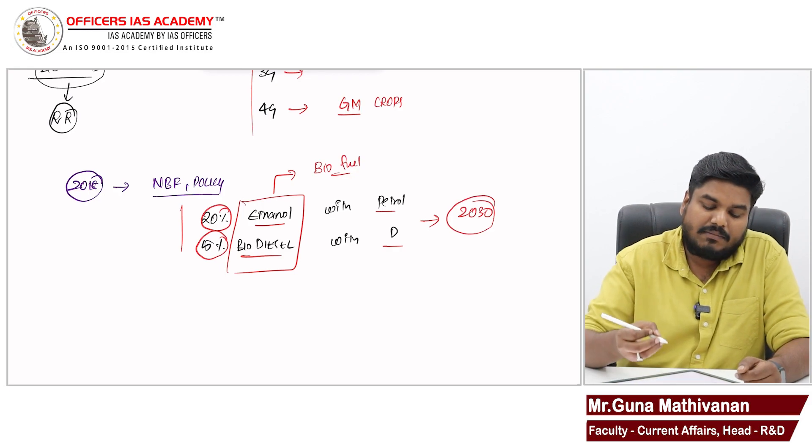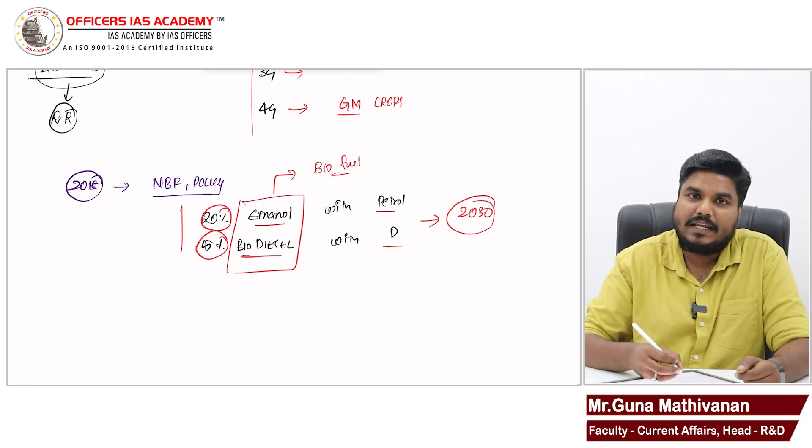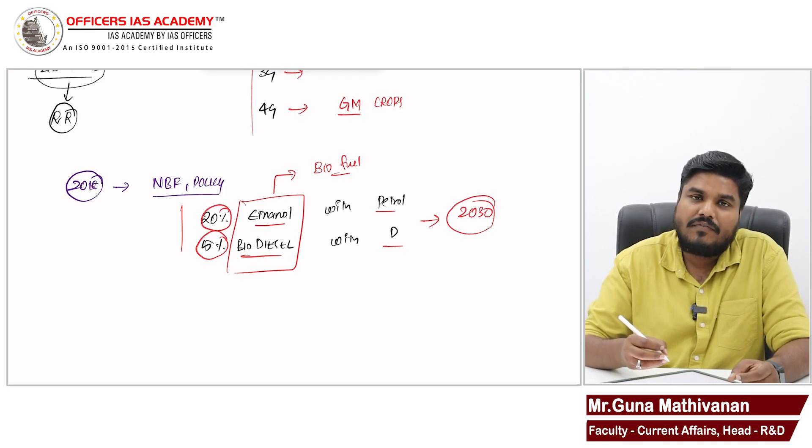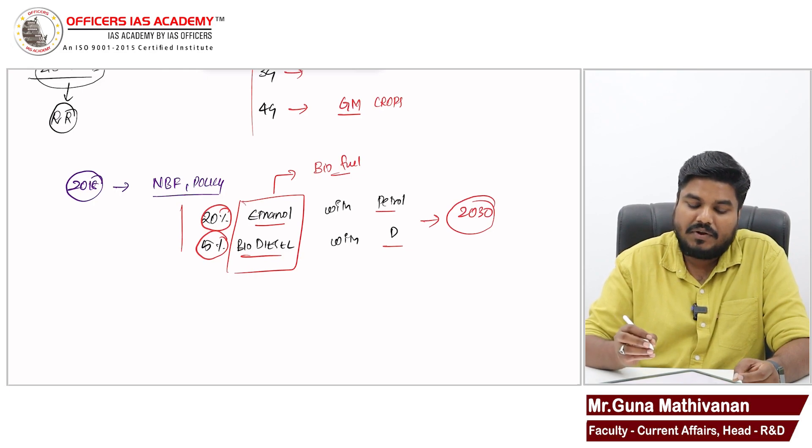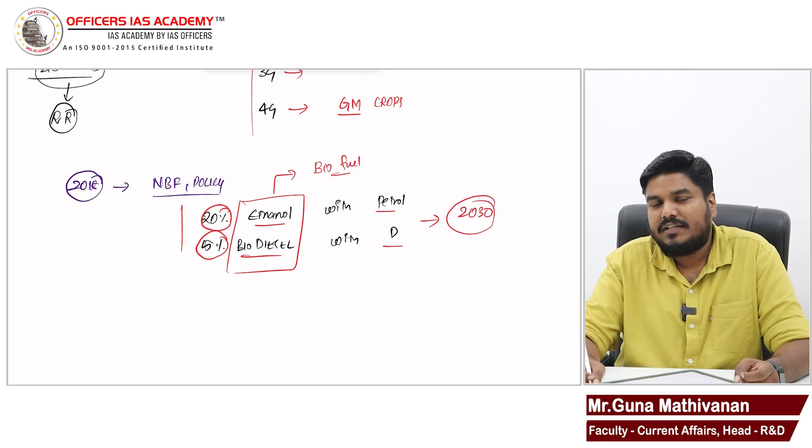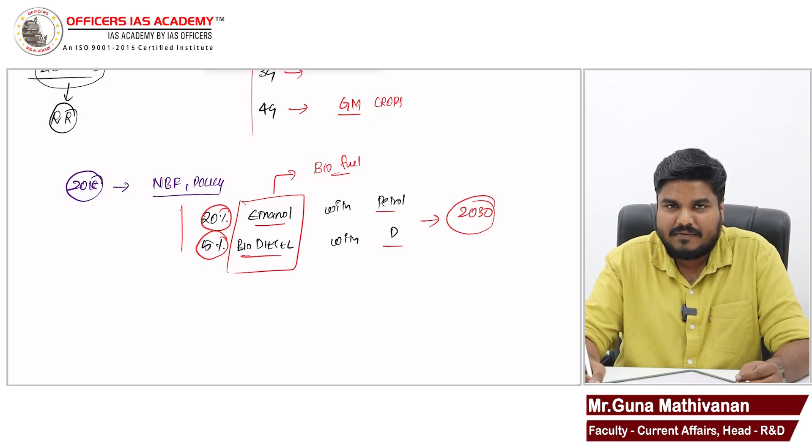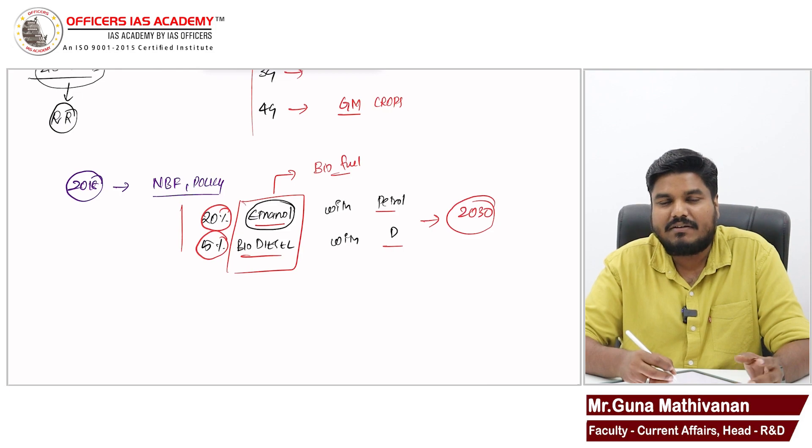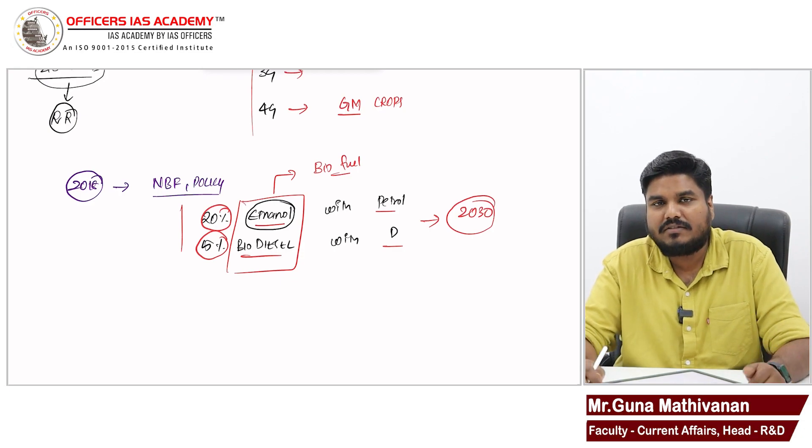This national biofuel policy is also increasing the scope of raw materials available for producing this biofuel. These biofuels are largely derived from sugar containing substances and this ethanol is largely derived from molasses that is from sugarcane. There were restrictions in the raw materials which can be used for producing this biofuel. However, in 2018, in this biofuel policy, government expanded the scope of raw materials.